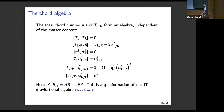If you stare at these expressions for a bit, you'll recognize — if you've read Harlow and Wu — that this is some sort of q-deformation of the JT gravitational algebra. There's actually quite a lot of information in these types of equations, and the rest of the talk will be trying to extract a little bit of this information from this algebra.